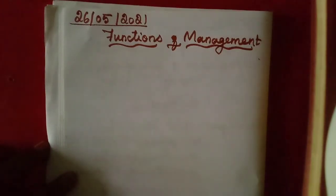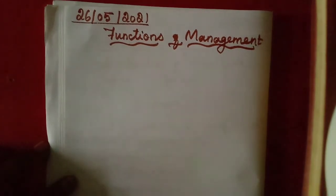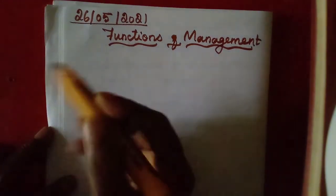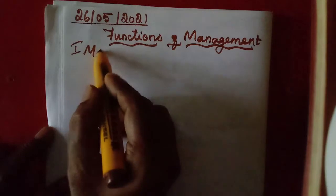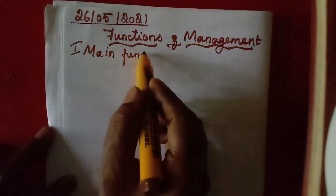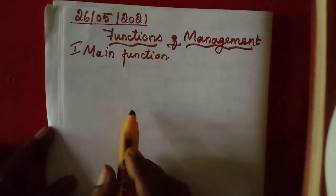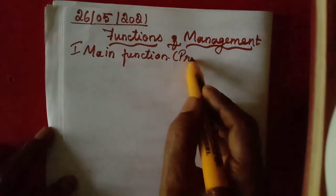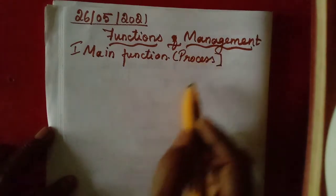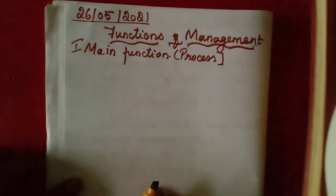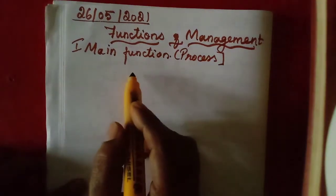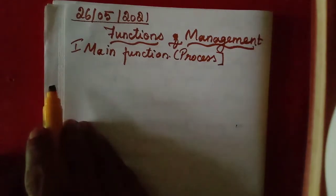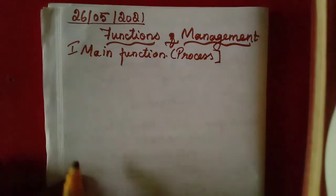If you study, every time they will ask one or two questions. So, the main functions — function means what they perform, isn't it? You can say it is the process — a continuous, ongoing process. What are the main functions that a manager has to perform? Function means the duties also we can say — duties of a manager. These functions of management mean the duties of the manager.